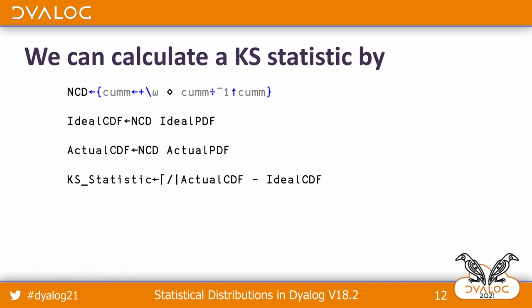Here's how we calculate a KS statistic. We take the PDF for the ideal case and run it through NCD to get the cumulative distribution, and do the same thing for the actual. Our statistic is to take the absolute value of the difference between the two across all values, and then take the maximum. It's essentially a very simple way of calculating how similar or different these distributions are.